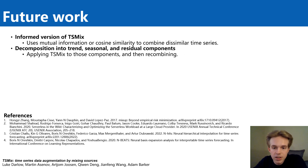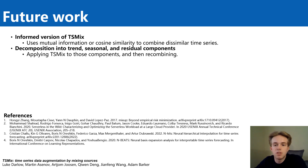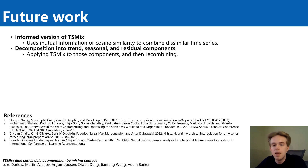Mixing different time series can be explored further in many ways. For example, an informed version of time series mix could use mutual information or cosine similarity as a metric to combine dissimilar functions instead of selecting randomly. Another option is to decompose multiple time series into components, apply TSMix separately, and then recombine them. And these are just some of the options that we foresee to be promising.